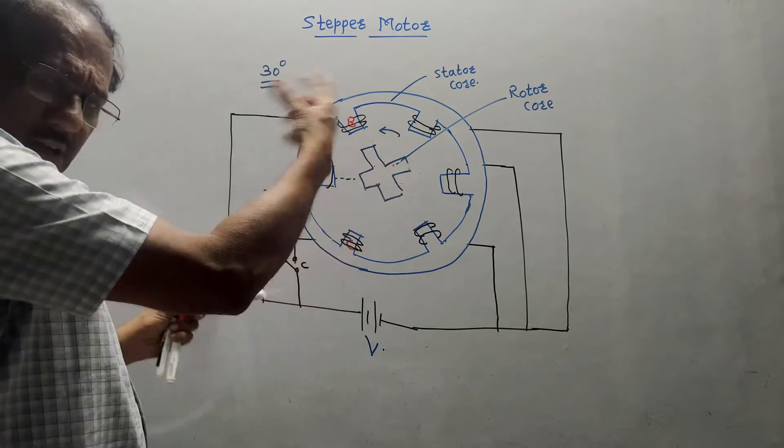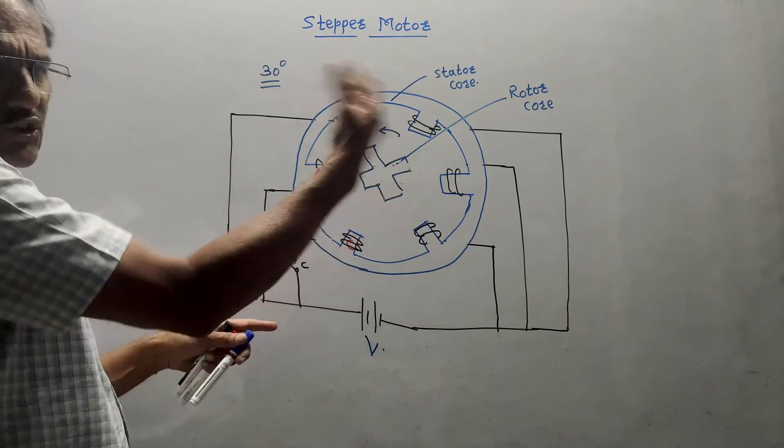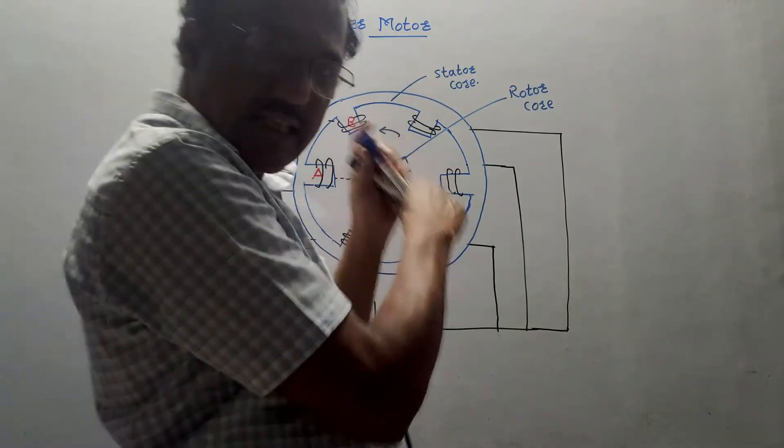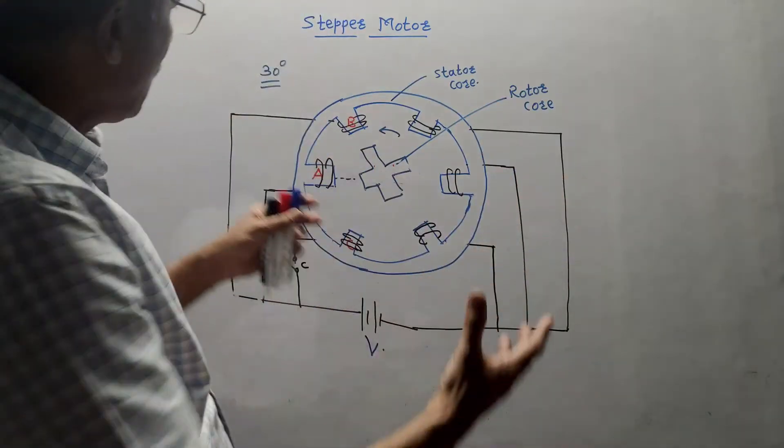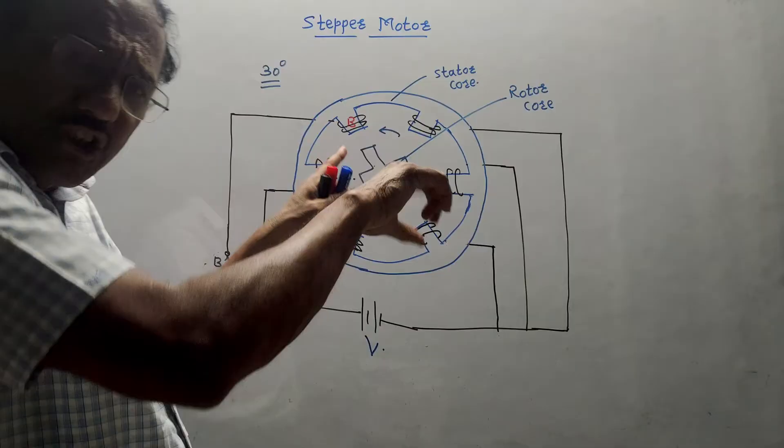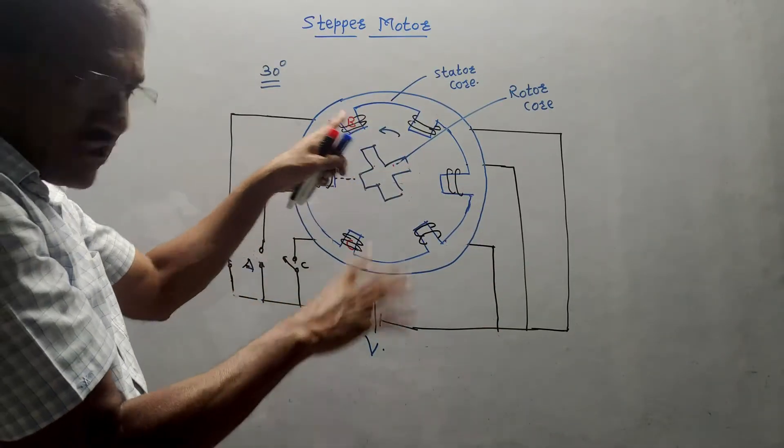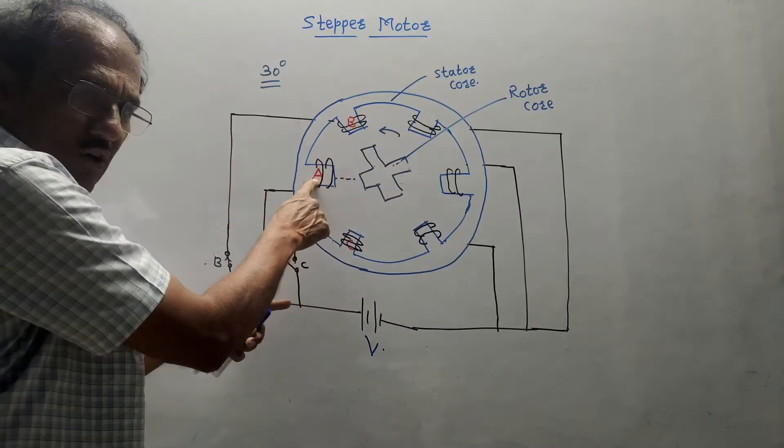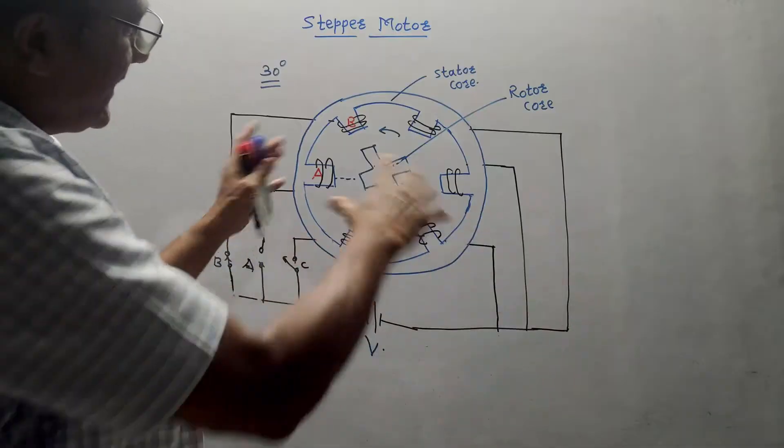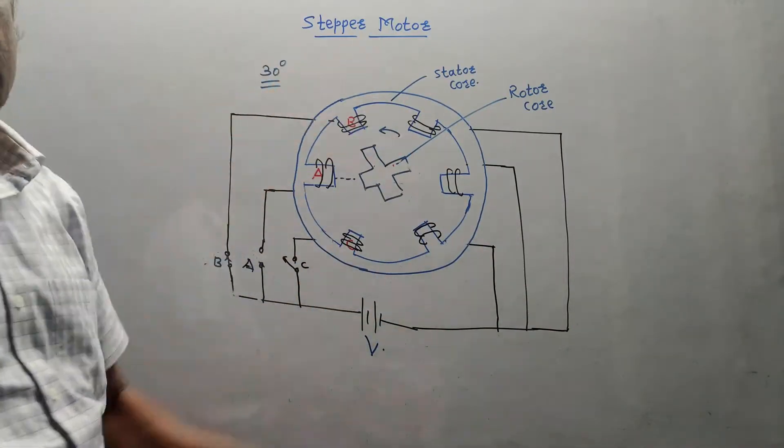Then I will change the switching. I will switch off this and I will switch on C and so on. Likewise, you can rotate this rotor every time. The rotor in this case, because of six teeth, it shows the rotation by an angle 30 degree. If I will change the sequence, if I will interchange the sequence, like initially I switched on A and then B, instead of that, if after switching on A, I will switch on C, then it will show rotation in clockwise direction and so on. This is the simplest working of a stepper motor.